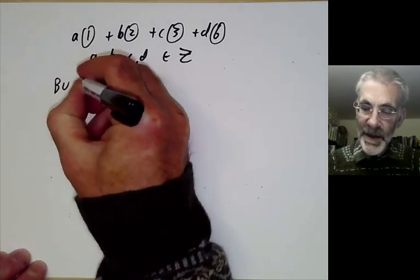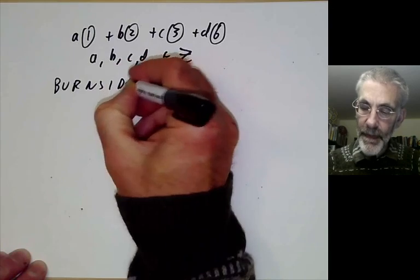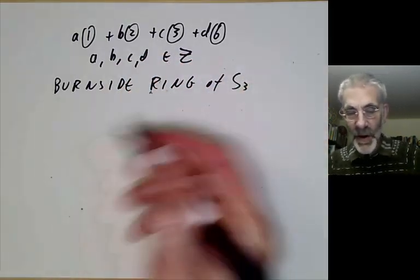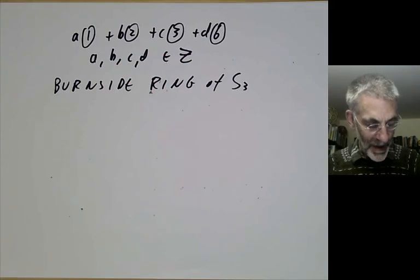This is called the Burnside ring of S3, and it's pretty obvious you can do something similar for any other finite group.